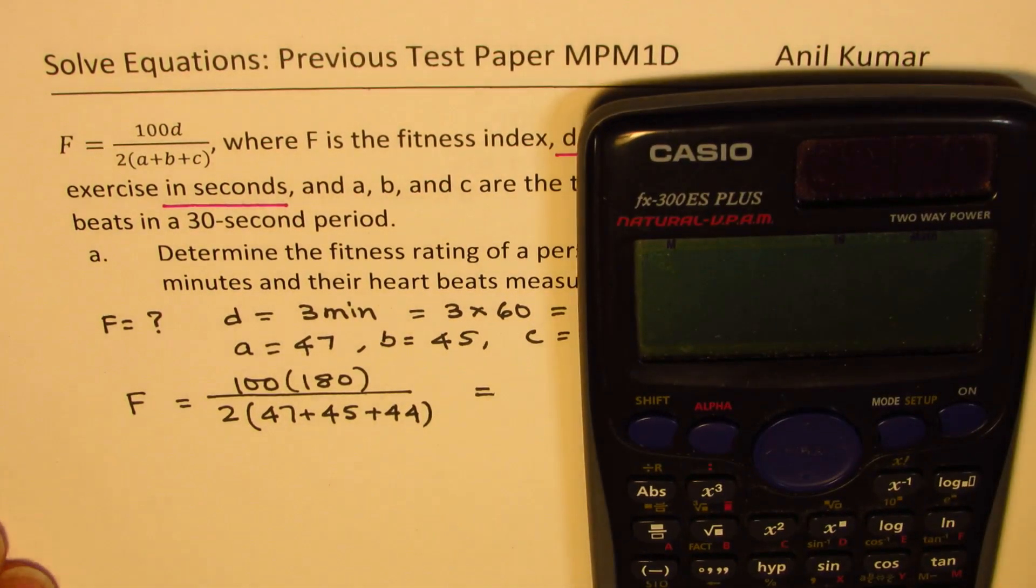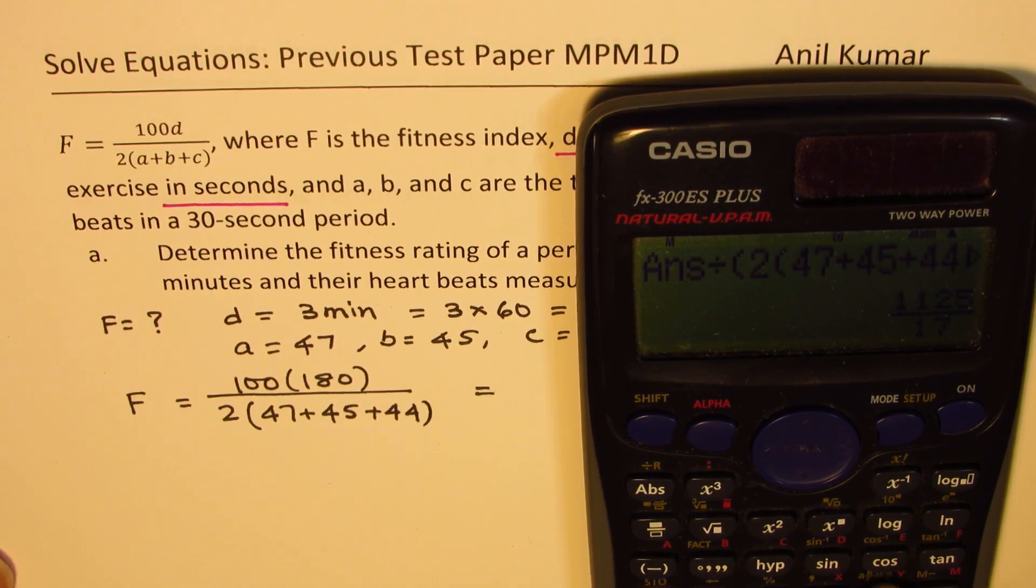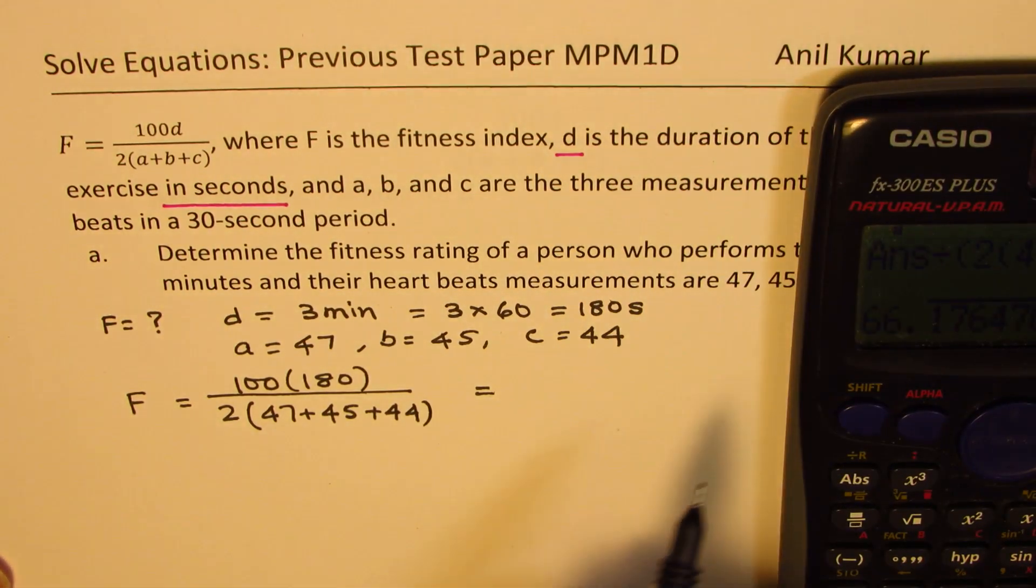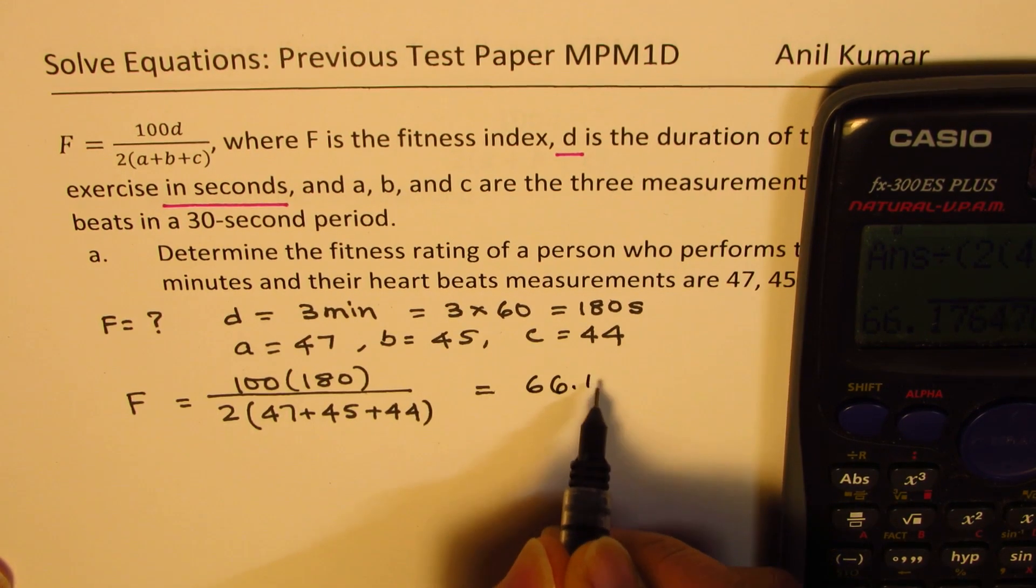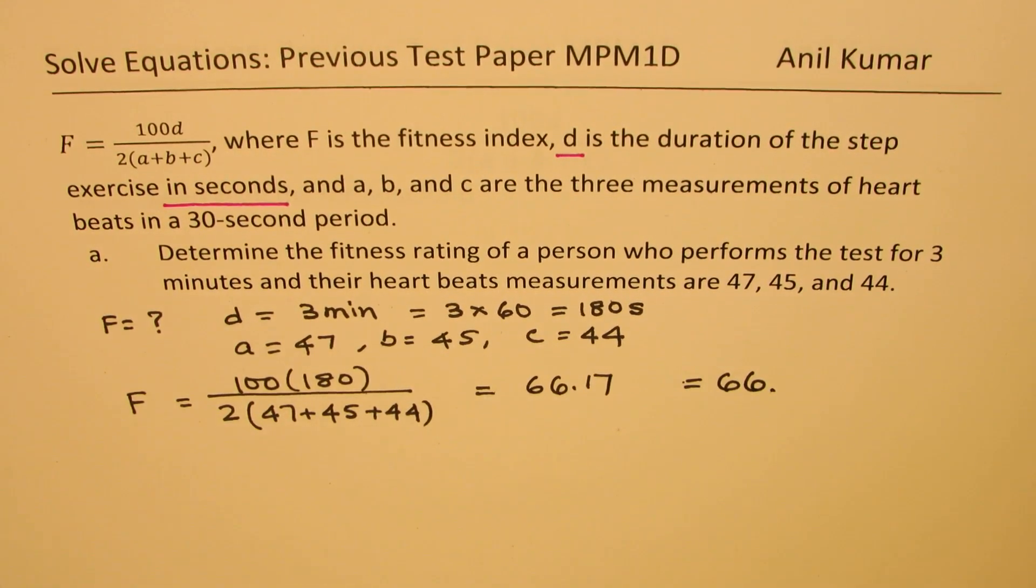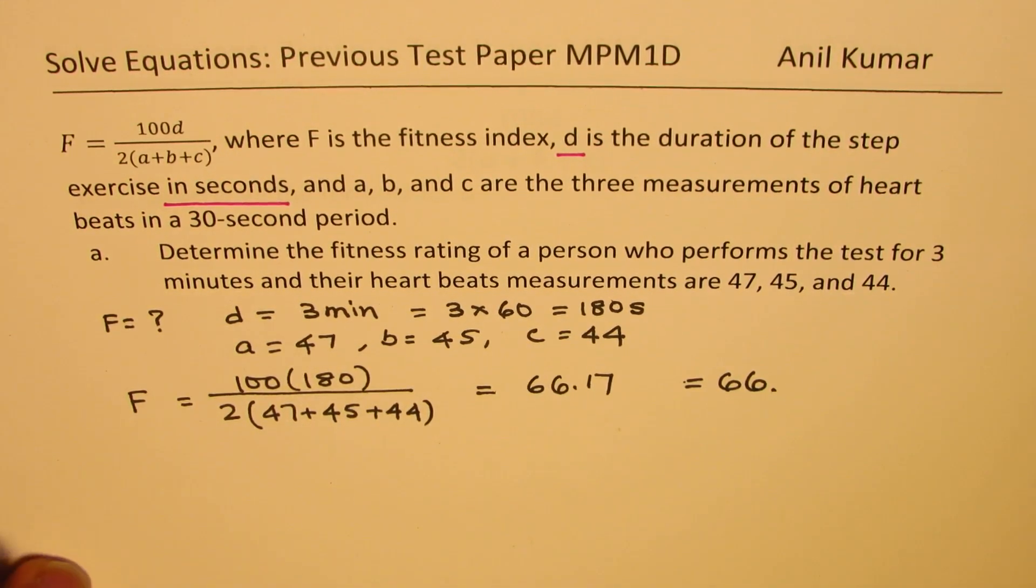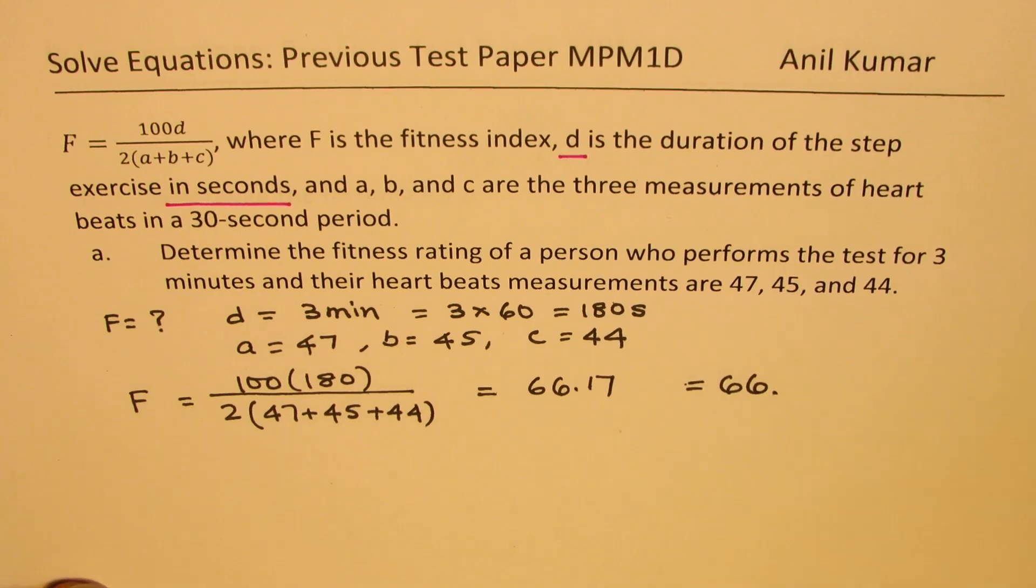So you can do the calculation. We need to multiply 100 by 180 and divide this by, in brackets, 2 times (47 plus 45 plus 44), two brackets close, equals to. So the decimal equivalent is 66.17. So approximately 66. So F value is 66 which is a high average. We just want to find the value of F which is 66 in this particular case.